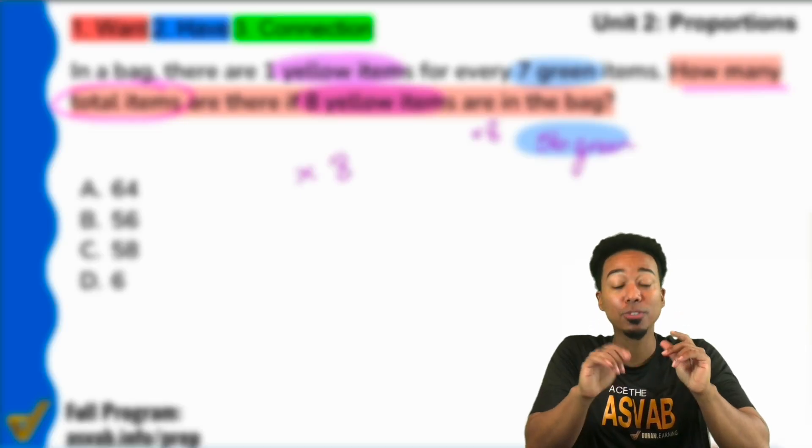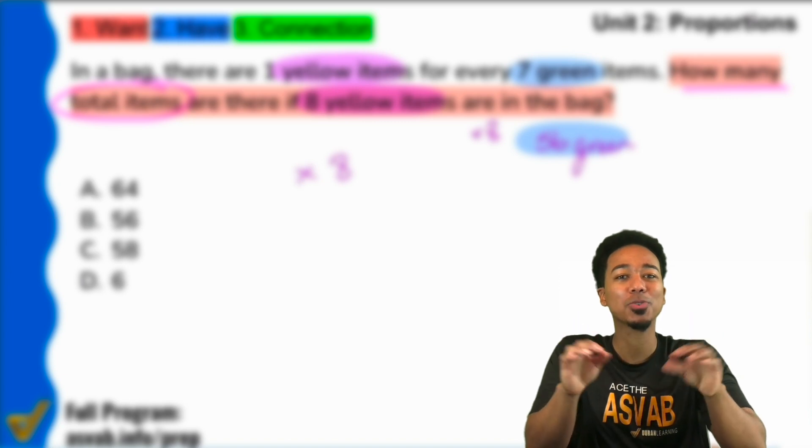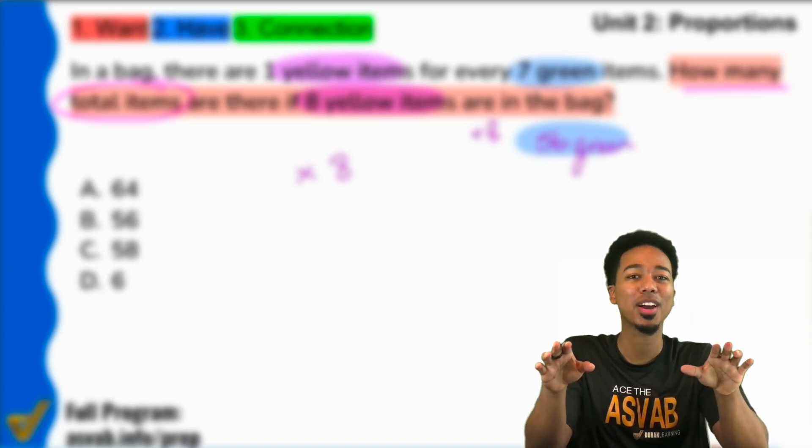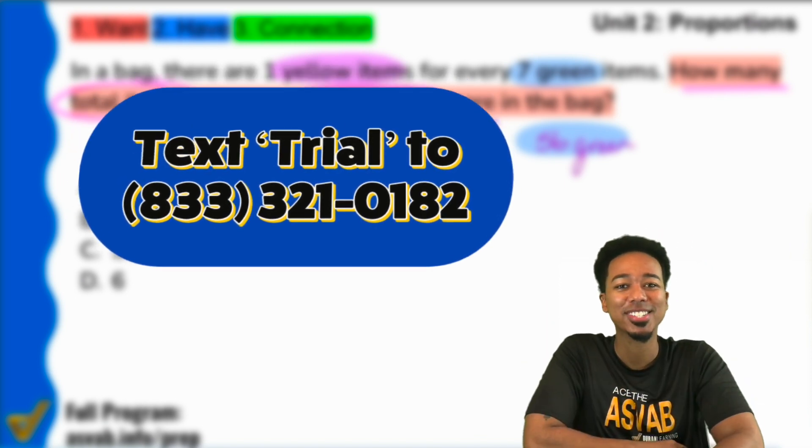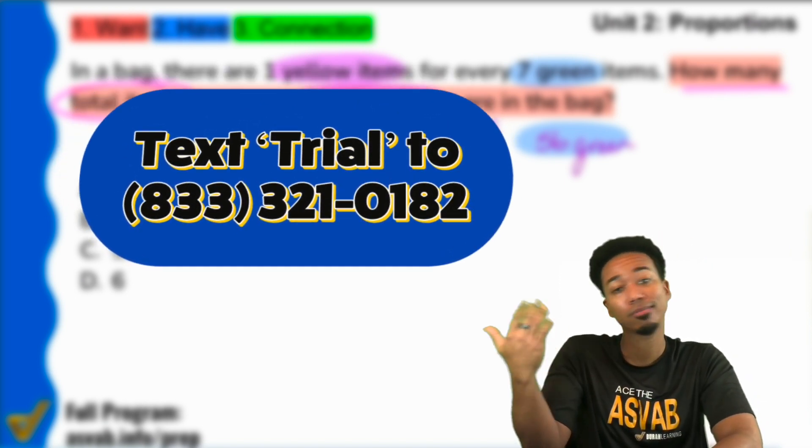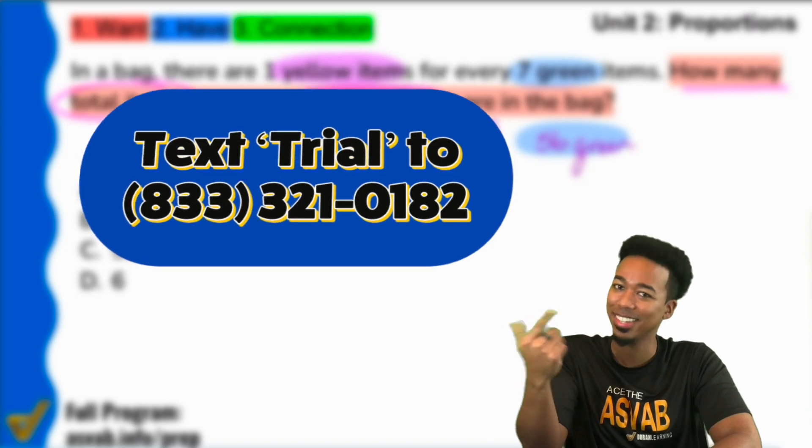And before you continue, just remember, you can get a free week to our full program, no credit card required. All you got to do is text trial to 833-321-0182. Do that real quick, get a free week, join all the classes and raise your score.